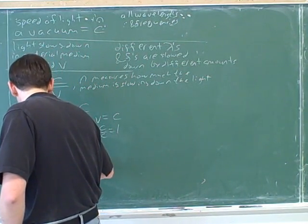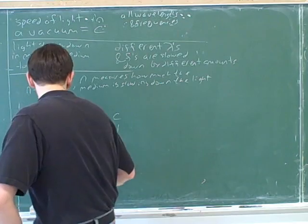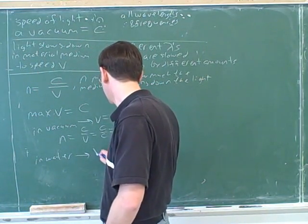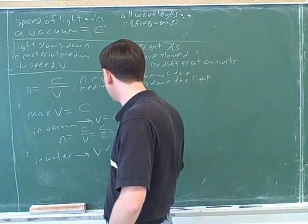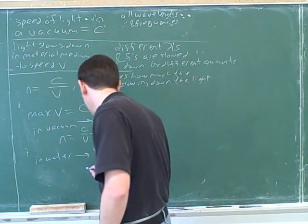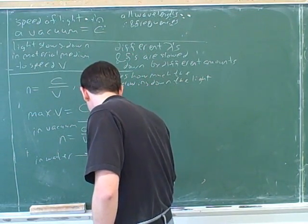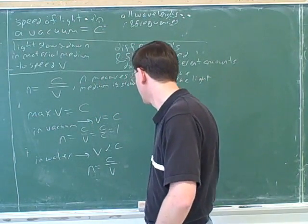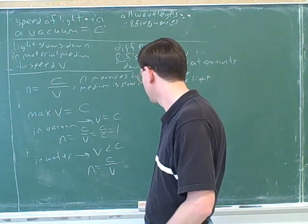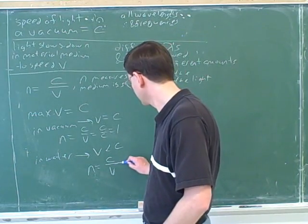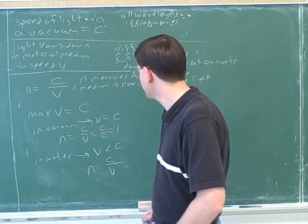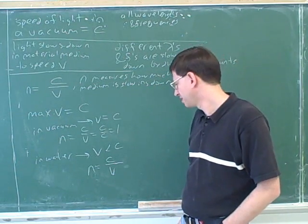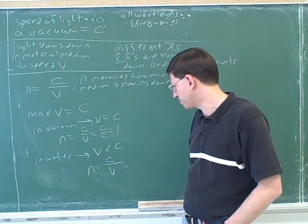Alright, now let's say we're in water. Well, now V is going to be less than C, right? So is N going to be bigger than 1 or smaller than 1? I think the big mistake you're making is you're thinking it through in your head. Remember we want to do the thought steps on paper. We need to write down our thought steps on paper.